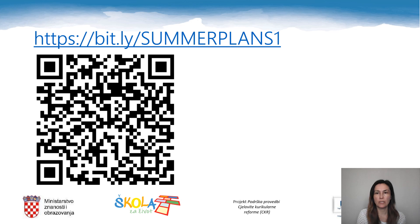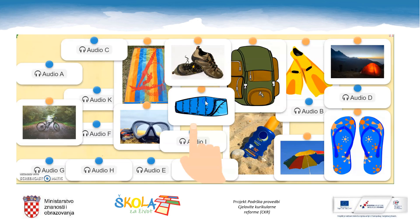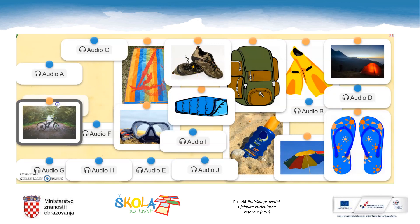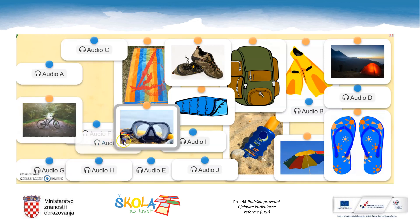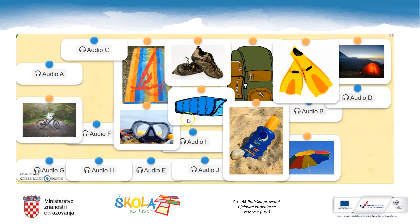Now copy the link into your web browser or scan the QR code in order to do the following exercise. Your task is to match the pictures to the words you can hear. If you click on the audio card, you will hear the word — for example, 'flip flops'. You can click on it as many times as you like. If you match the wrong pair, it is not a big deal. You can click between the audio card and the picture card to undo your action. When you match the correct pair, it will disappear from the screen, giving you more space. Good luck with your task.